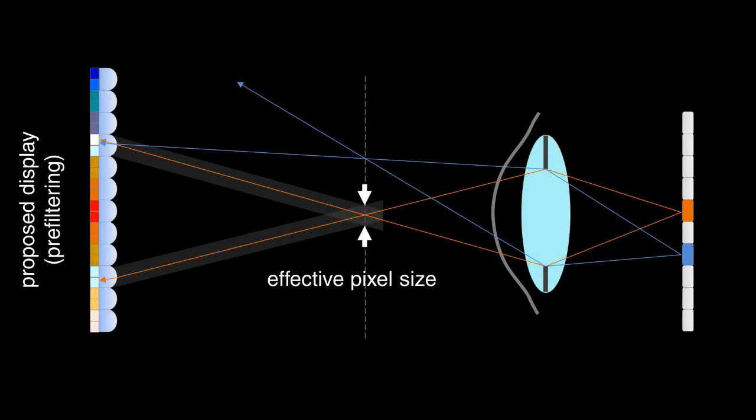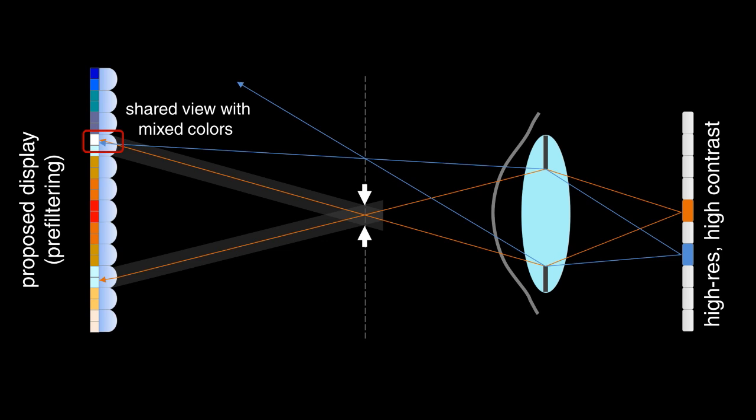Our method also uses a light field display, but since the light field is prefiltered, the pixels are smaller, and the resolution is higher. For some views, the colors are also mixed, but the contrast problem is reduced due to a higher angular sampling rate.